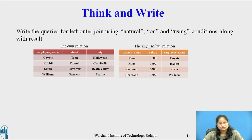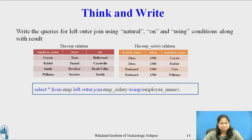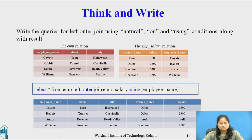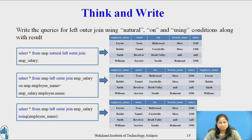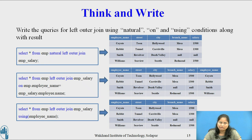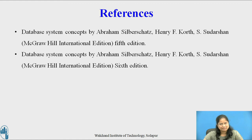Now consider the left outer join using the USING condition. The query is: SELECT * FROM emp LEFT OUTER JOIN emp_salary USING (employee_name). The result contains the common attribute employee name only once. Queries for left outer join using natural, on, and using conditions along with results are shown on this slide. The results using the natural and using join conditions are the same, with the common attribute employee name appearing only once. With the on join condition, employee name appears twice.